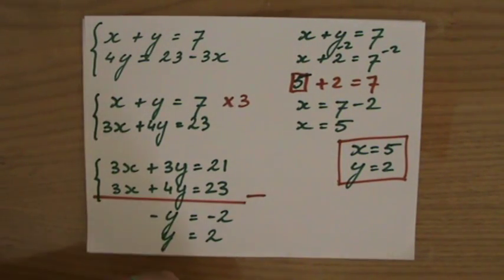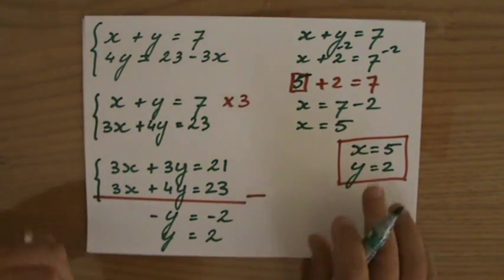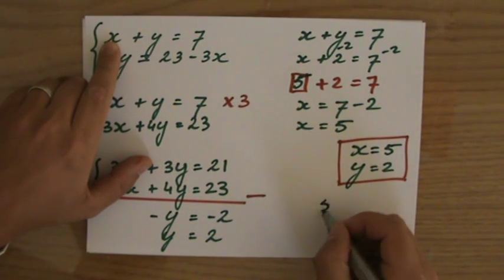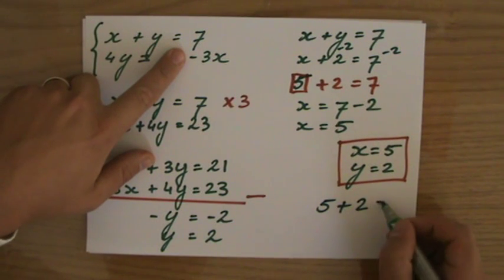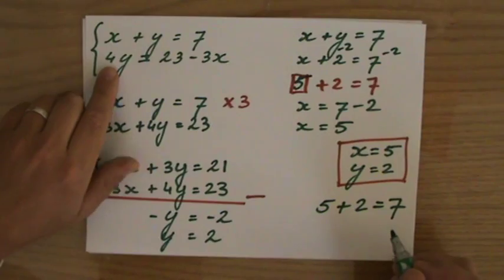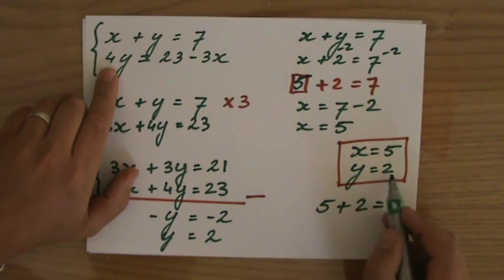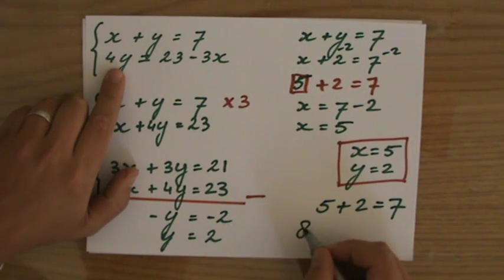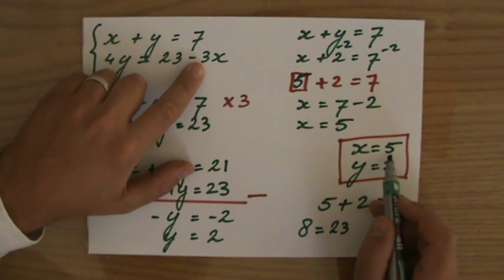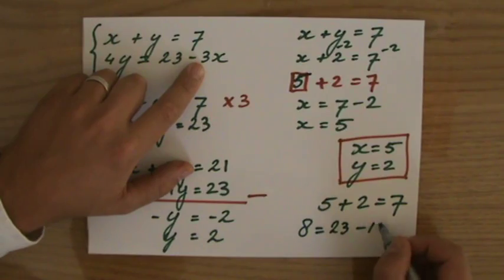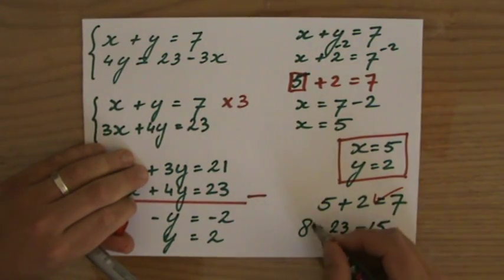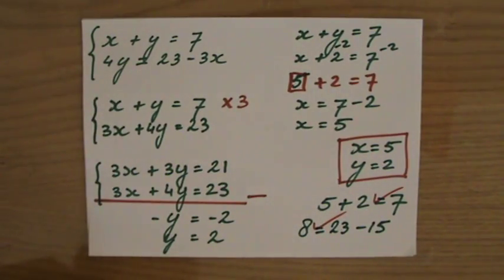Let me check this. I'll do it relatively quickly again. x plus y, so it's going to be 5 plus 2 equals 7. Well, it is, isn't it? Okay, the next one, 4y, so 4 times 2, that is 8, equals 23 minus 3 times x, minus 3 times 5, minus 15. And 23 minus 15 indeed is 8. Both equations are correct.